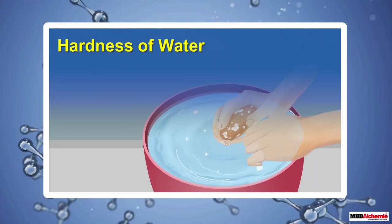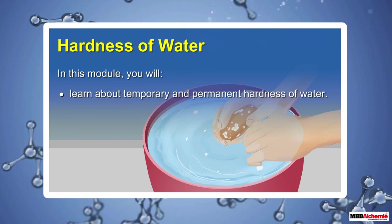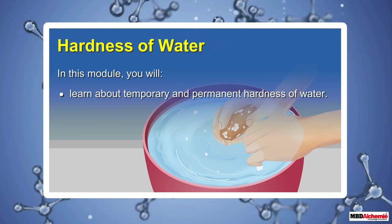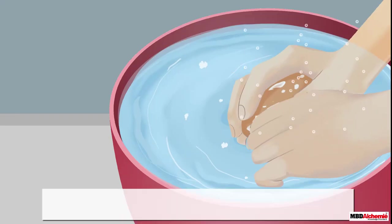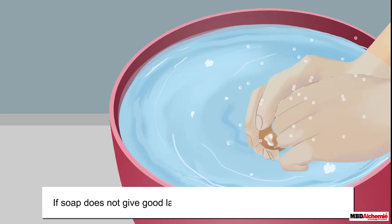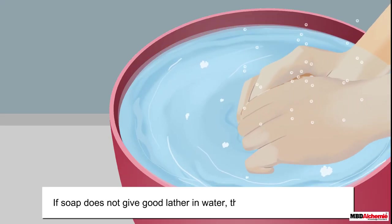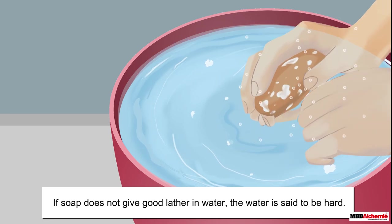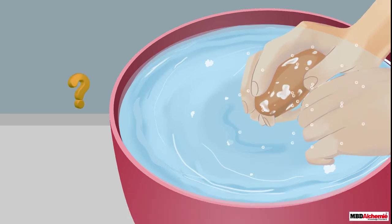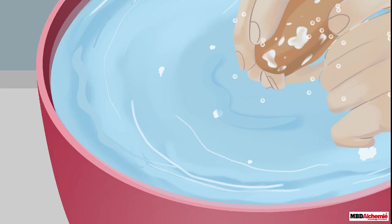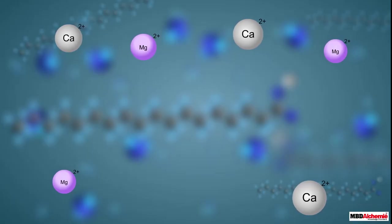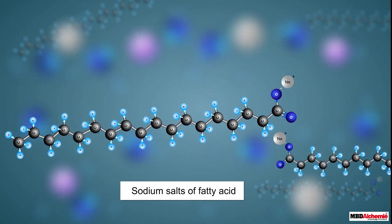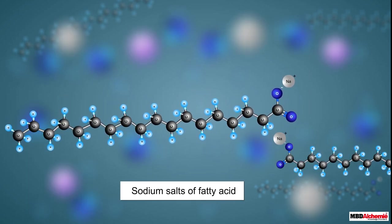Hardness of water. In this module you will learn about temporary and permanent hardness of water. If soap does not give good lather in water, the water is said to be hard. Calcium and magnesium ions present in water make it hard. Soaps contain sodium salts of higher fatty acids.